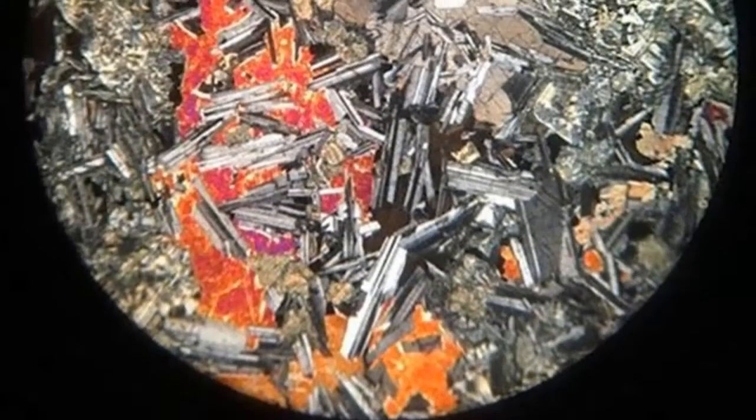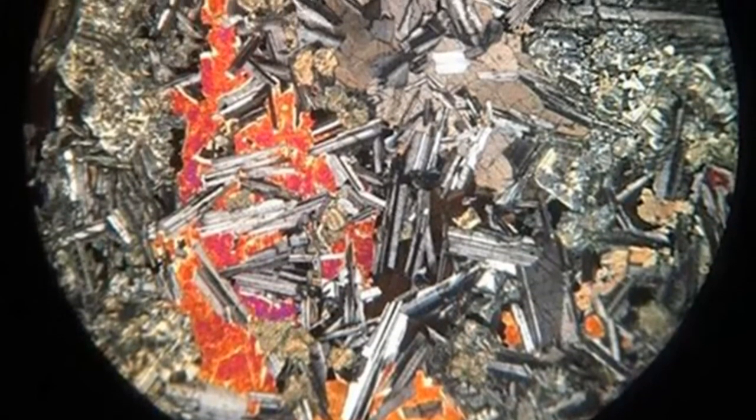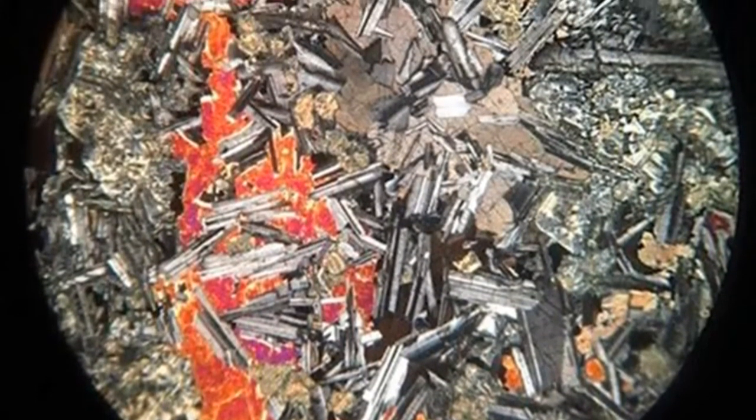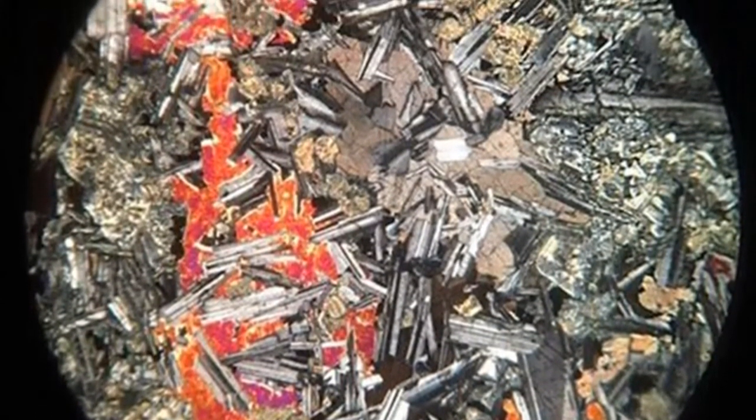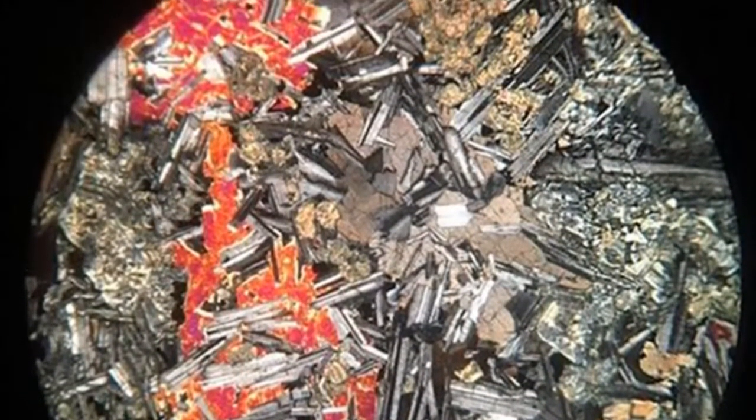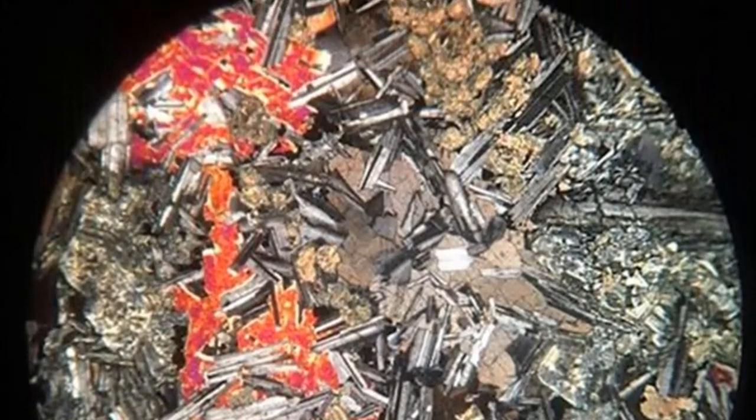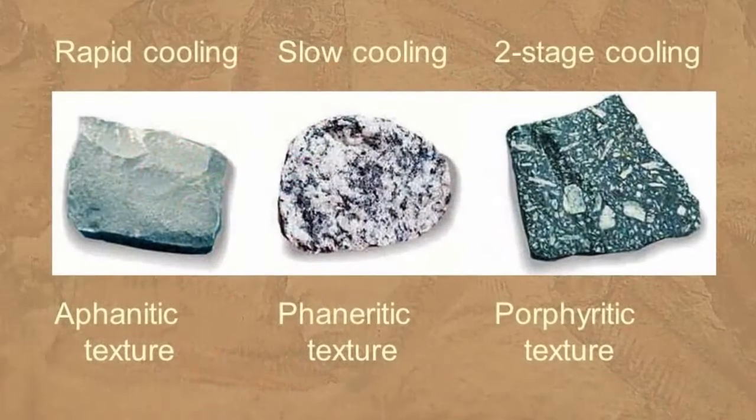Section 3.4.2 covers Aphanitic Texture, Phaneritic Texture, and Vesicular Texture. Aphanitic texture is fine-grained. Igneous rocks that form at the surface, or as small masses within the upper crust, where cooling is relatively rapid, possess a very fine-grained texture termed aphanitic.